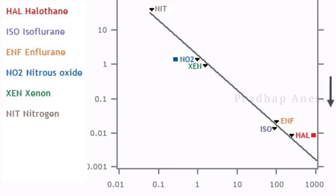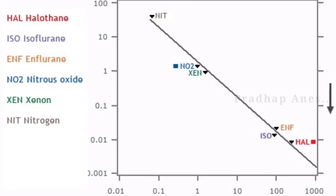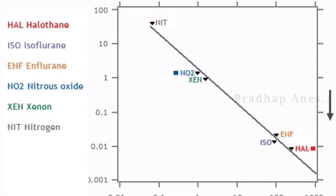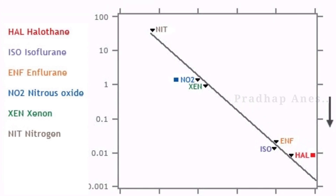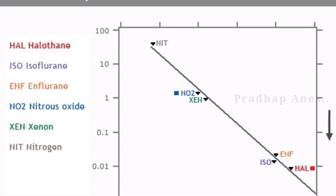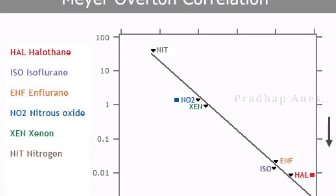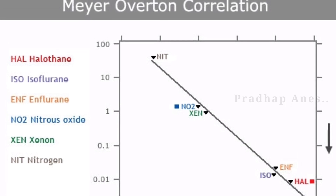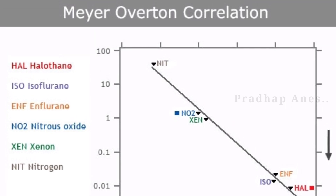The anesthetic potency of an inhalational agent is directly proportional to its lipid solubility — the oil gas partition coefficient. This is called the Meyer-Overton rule.